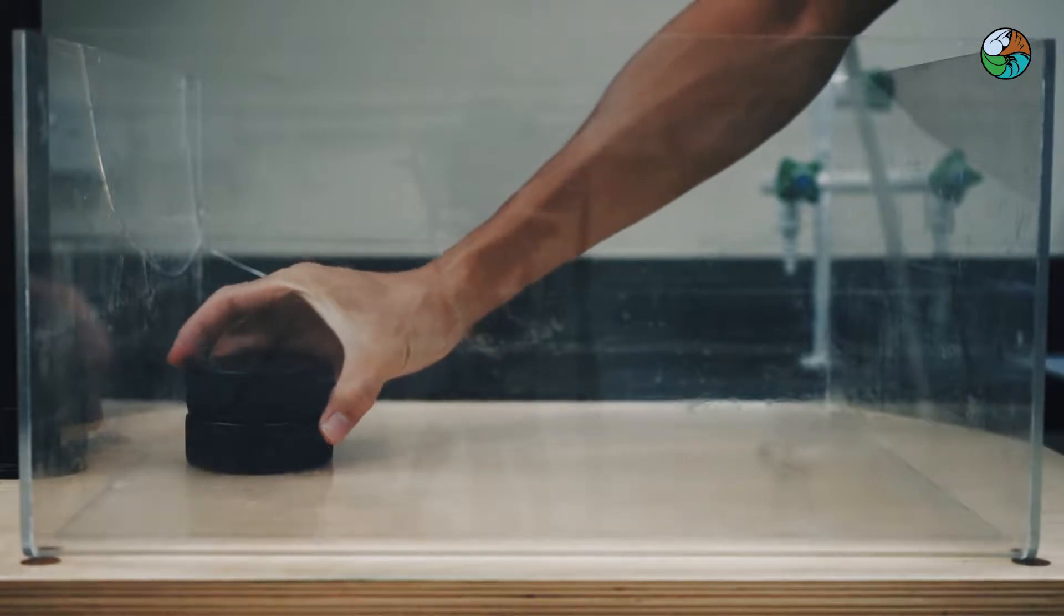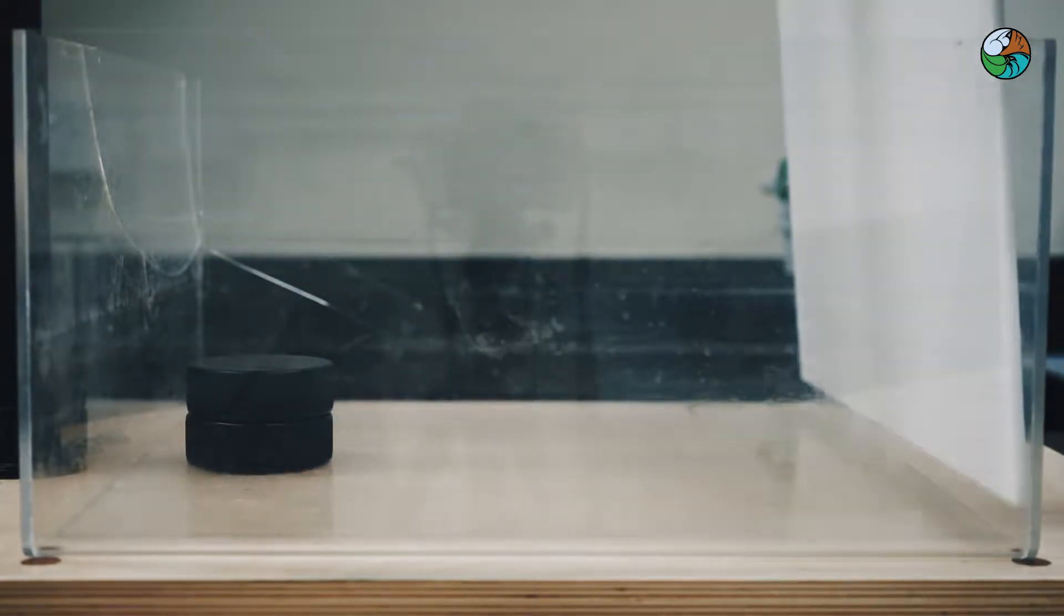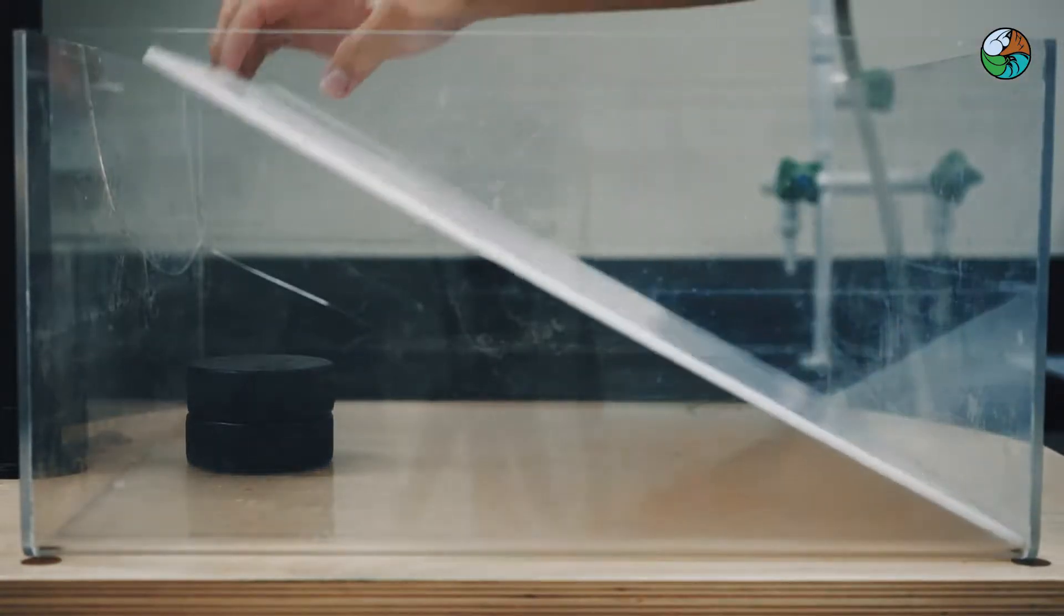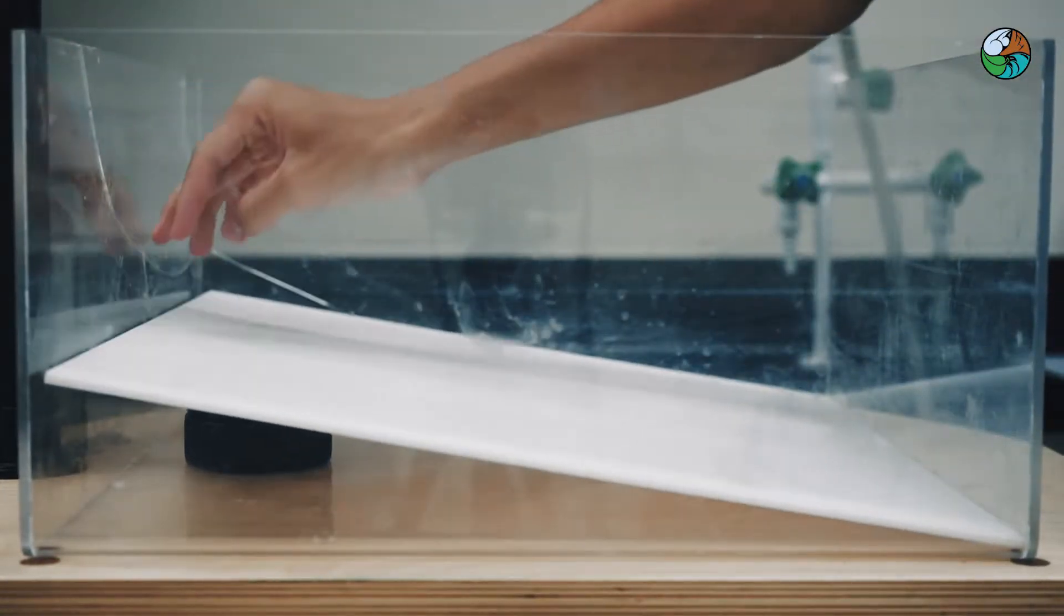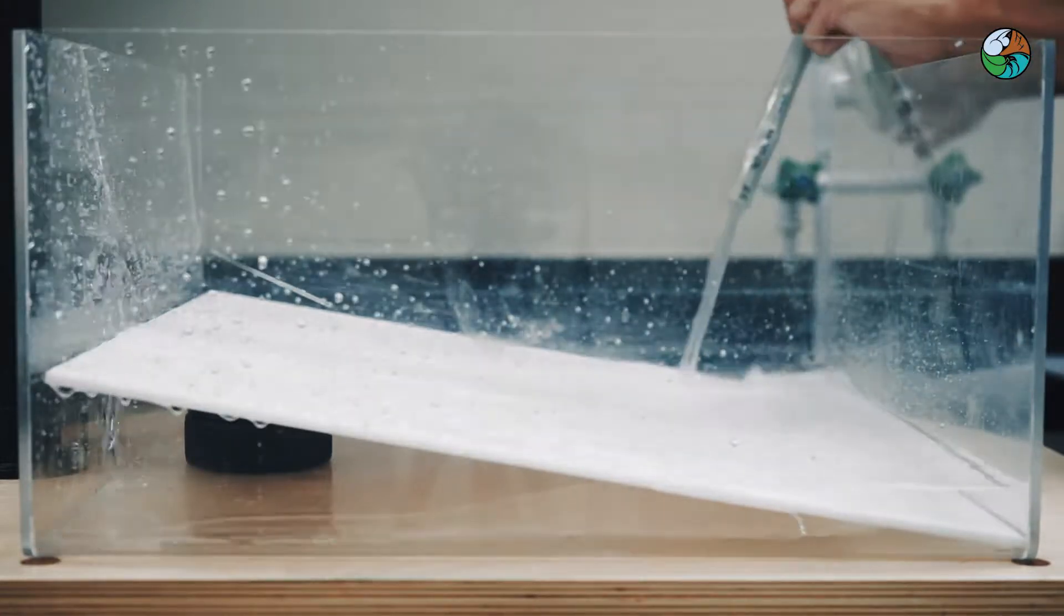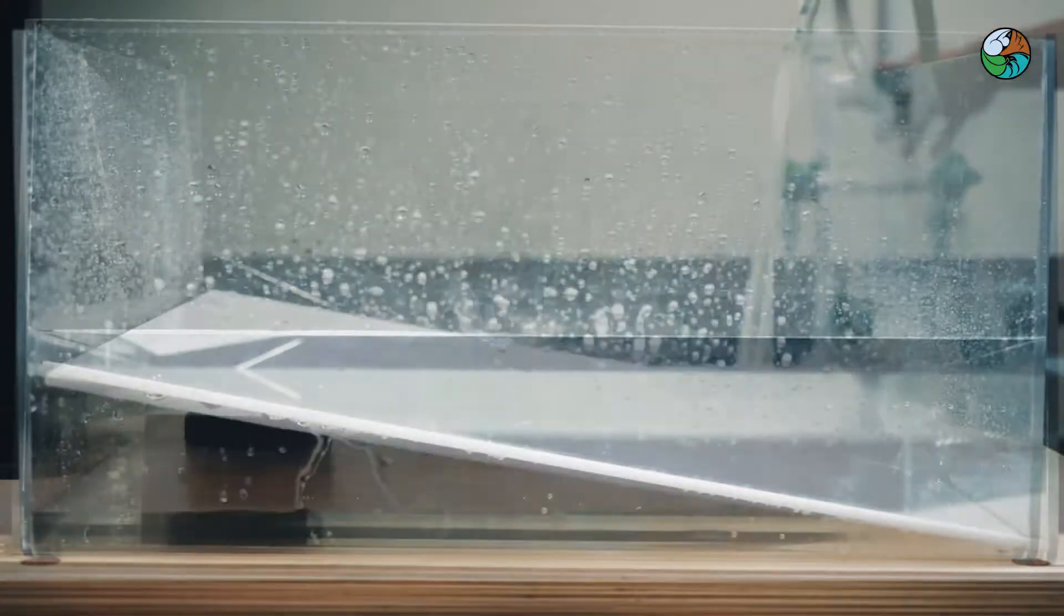Place some flat obstacles on one side of the water tank. Together with an acrylic board, a tilted bottom is set up. Add water until the shallower region has a water depth of about 2 cm.